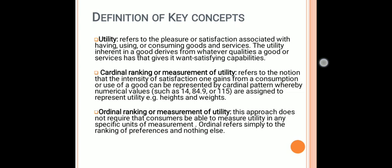Moving next is ordinal ranking, or ordinal measurement of utility. In this case, unlike cardinal utility, we do not measure utility numerically. Instead, we give ranks and comparisons — we identify goods according to preference and ranking.